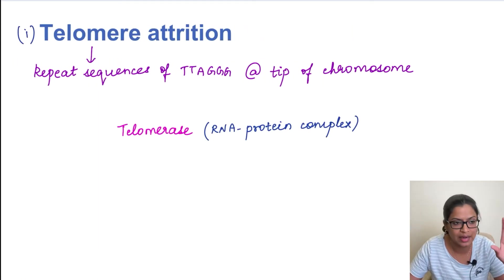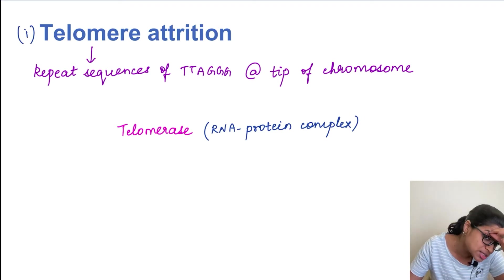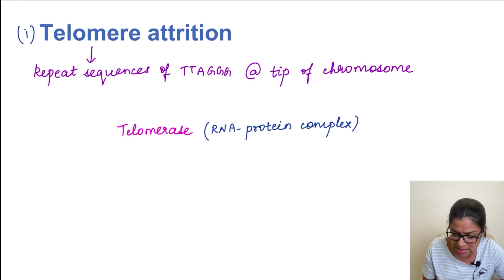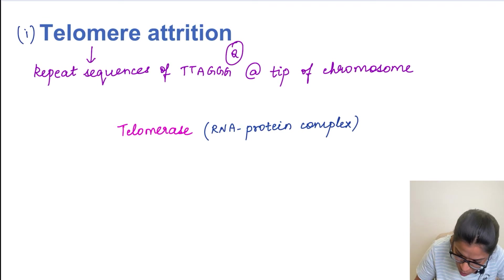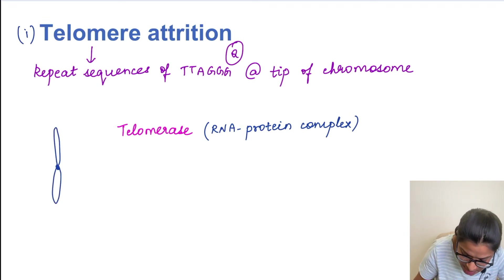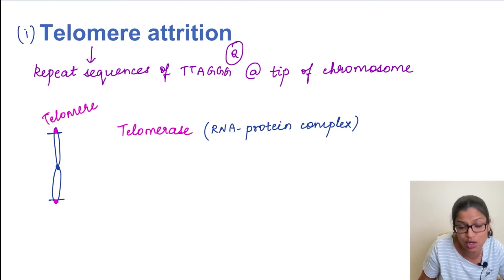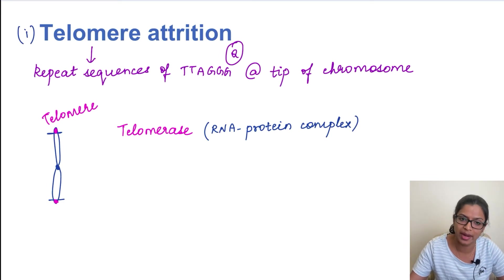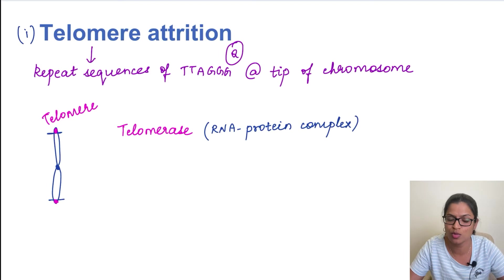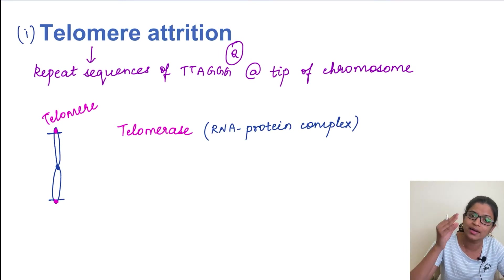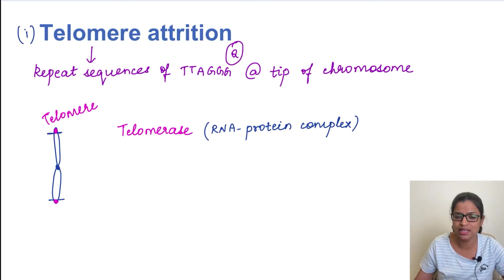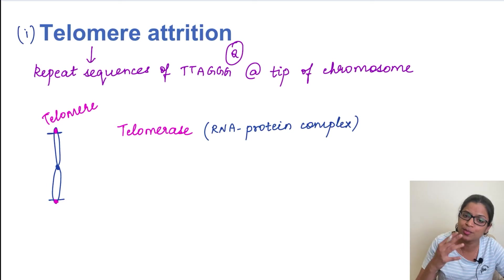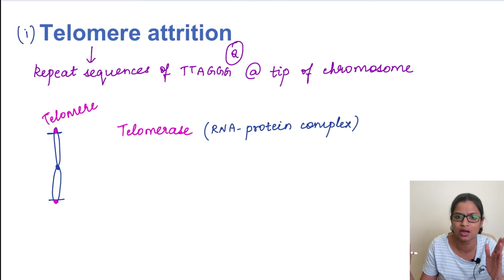Attrition means loss — the telomere is getting lost. Telomeres are repeated sequences of TTAGGG present at the tips of chromosomes. If this is the centromere, you have the chromosome like this, and at the tips you have the telomeres. The function of these telomeres is to protect the DNA from breakage and fusion, preventing the chromosome from being damaged during cell division. But with each cell division, a part of the telomere is going to get lost. With continuous cell division, the telomeres are obviously going to get lost. To prevent this, there is an enzyme called telomerase — an enzyme which actually protects the telomeres and prevents their shortening.